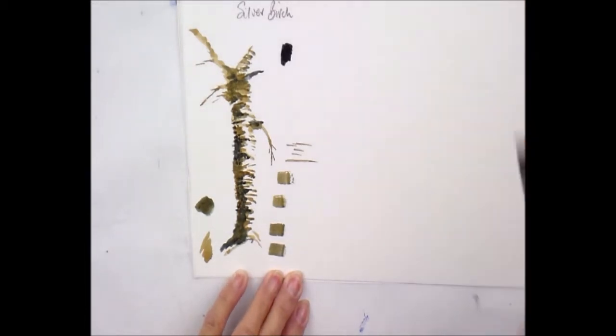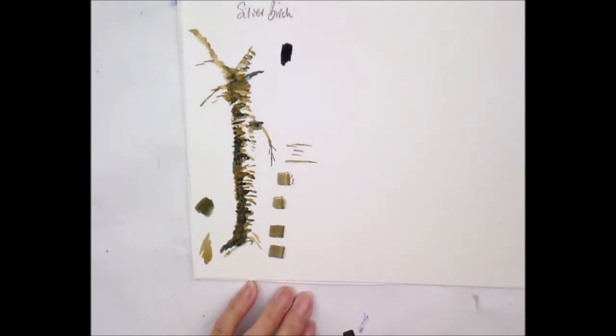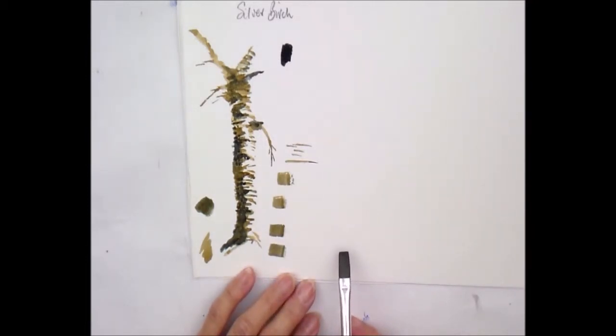Silver birches have peeling bark. In America you've got maples. There'll be similar trees and barks. But this is the idea of showing you how to use this brush this way.